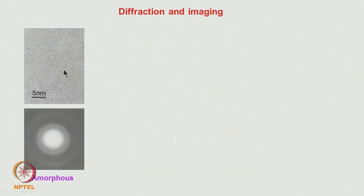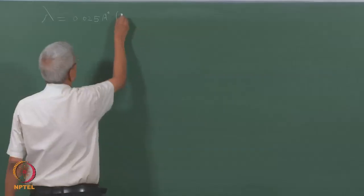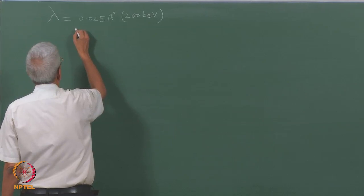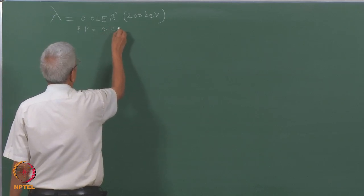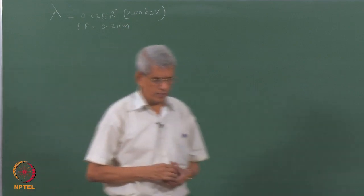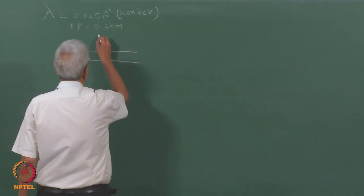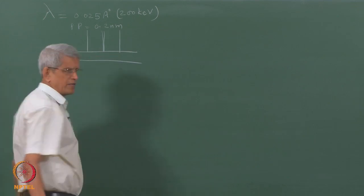The microscope can be operated at different length scales. The wavelength of the electron beam is of the order of 0.025 Ångströms for 200 kV radiation. Due to various lens aberrations, the point-to-point resolution in a conventional microscope is of the order of 0.2 nanometers. Since it is an electron beam, we can focus it to a very small area or spread it over a very large area — these are all advantages of working with a lens.